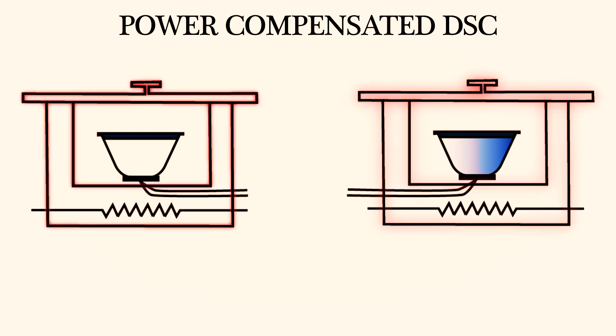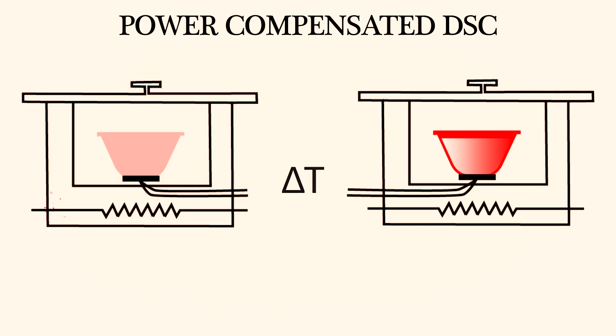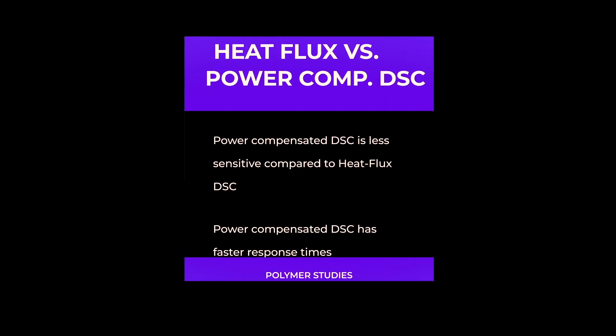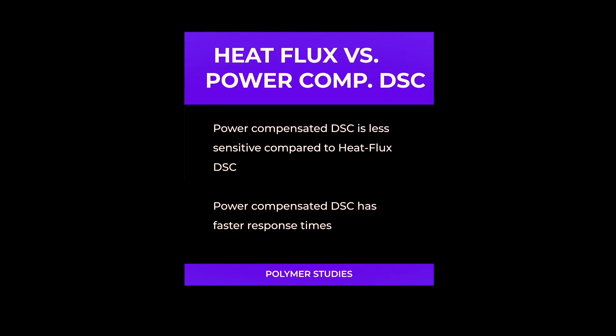Once again as the furnace is heated, the sample calorimeter lags behind the reference calorimeter due to its mass. The sensors capture this temperature difference and send an increased power onto the sample heater to minimize this temperature difference. The instrument records power difference needed to maintain the sample and reference to the same temperature as a function of program temperatures. Power compensated DSC is less sensitive compared to heat flux DSC but it has faster response times, which is why it is used for kinetic studies in polymers.